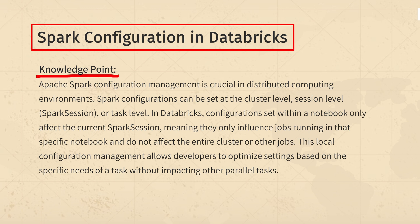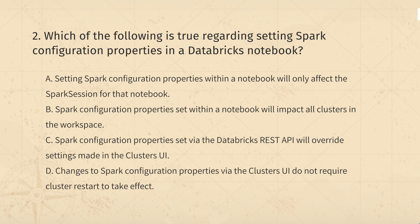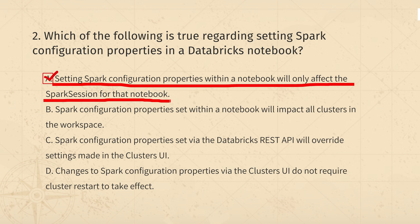The knowledge points of this question are: In Databricks, any Spark settings you change in a notebook only affect that notebook's tasks. It doesn't affect other jobs or clusters. This way, you can tweak settings for specific tasks without impacting others. So, the correct answer is: setting Spark properties in a notebook only affects that notebook, not others.